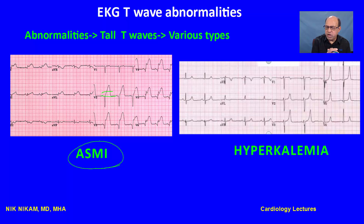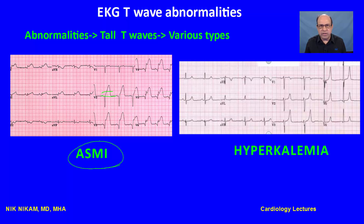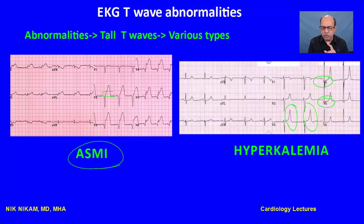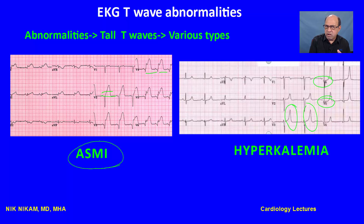The other common condition for tall peaked T waves is hyperkalemia — seen in chronic renal failure patients on dialysis who skip dialysis or miss medications, presenting with potassium in the range of 6, 7, or 8 mEq/dL. An important differentiating point from acute MI is that the ST segments in hyperkalemia are isoelectric, at the baseline. Also, the T waves are much narrower compared to the broad tombstone T waves of MI — in hyperkalemia they look like daggers or sharp knives. These subtle differences help differentiate tall T waves from acute MI versus acute hyperkalemia.